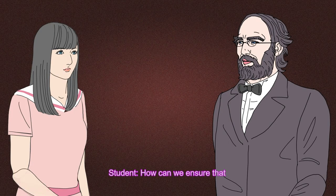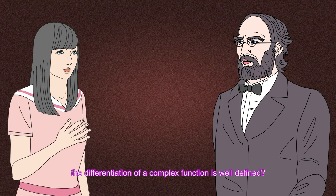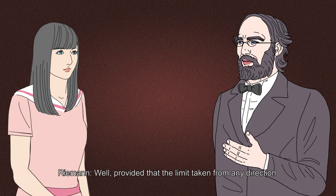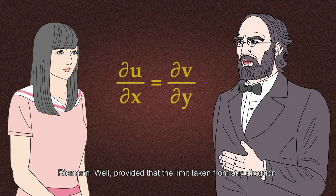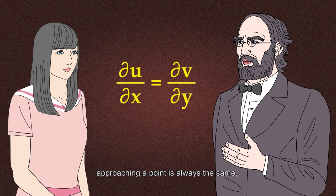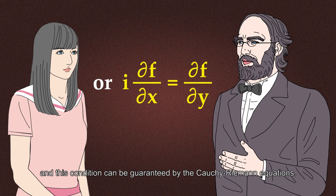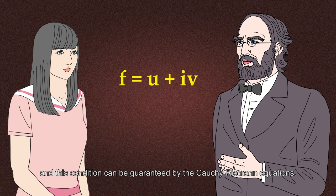How can we ensure that the differentiation of a complex function is well defined? Well, provided that the limit taken from any direction approaching a point is always the same, and this condition can be guaranteed by the Cauchy-Riemann equations.